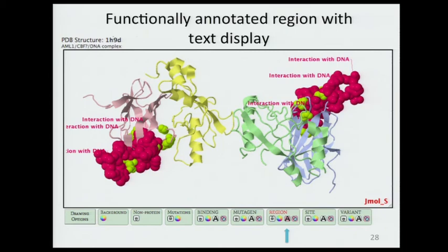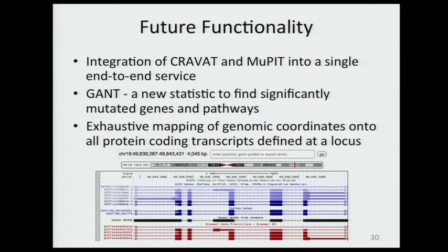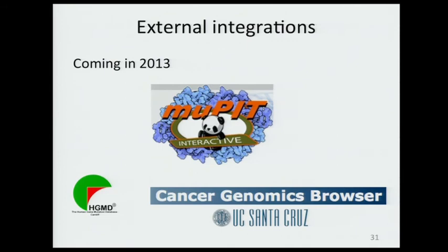It turns out RUNX1 has been recently implicated in breast cancer, really just in the past two years, now believed to be a tumor suppressor and significantly mutated. Looking ahead to future functionality: we have GANNT, a new statistic to find statistically significantly mutated genes and pathways that we will be adding soon. We're also looking at more exhaustive mapping of mutations onto transcripts, and something I'm very excited about — integration with the UCSC Cancer Genomics Browser and the Human Gene Mutation Database, coming in 2013.